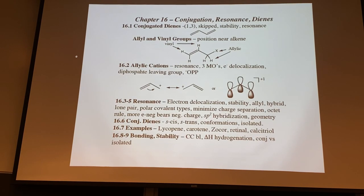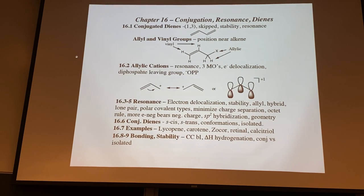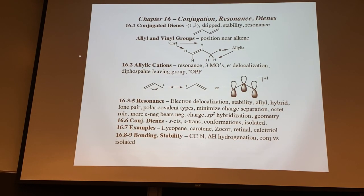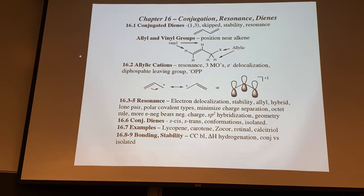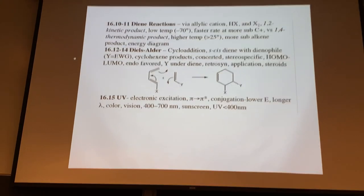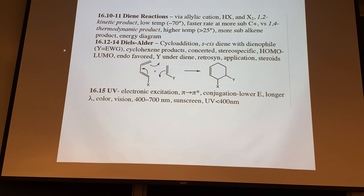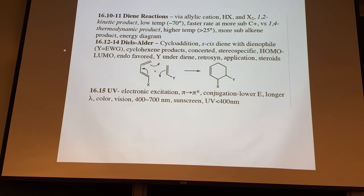Conjugated dienes have double bonds right next to each other; isolated dienes have an intervening saturated carbon; accumulated dienes have double bonds on adjacent carbons. The 1,2- versus 1,4-addition reactions for conjugated dienes and the Diels-Alder reaction: a diene reacts with a dienophile - usually the dienophile has an electron-withdrawing group making it electron-deficient, while butadiene is electron-rich. Electrons push around the ring to make a cyclohexene product with stereochemical consequences.